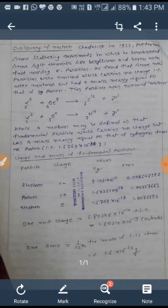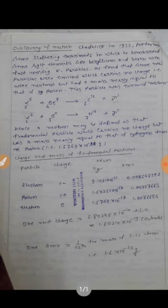Hence, a neutron may be defined as that fundamental particle which carries no charge but has a mass nearly equal to that of hydrogen atom or proton. That is 1.6749 into 10 to the power minus 24 gram.